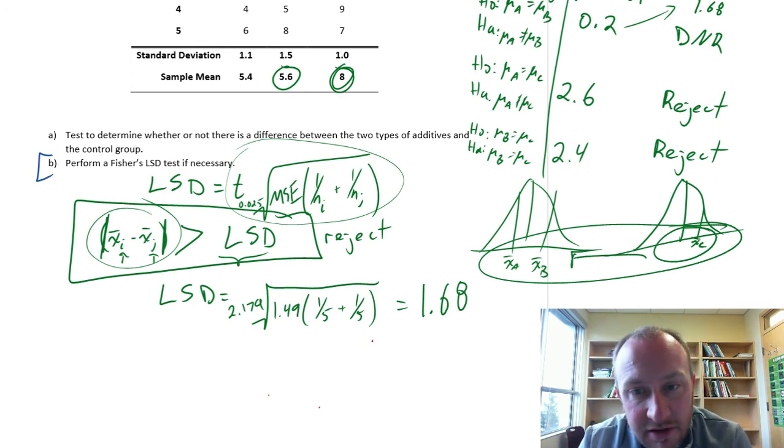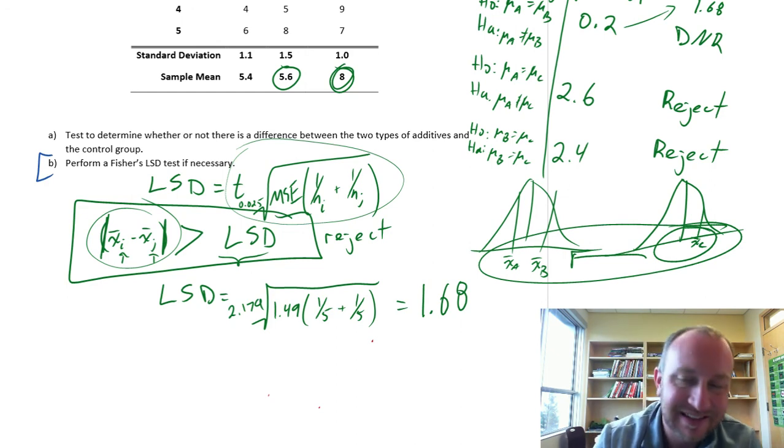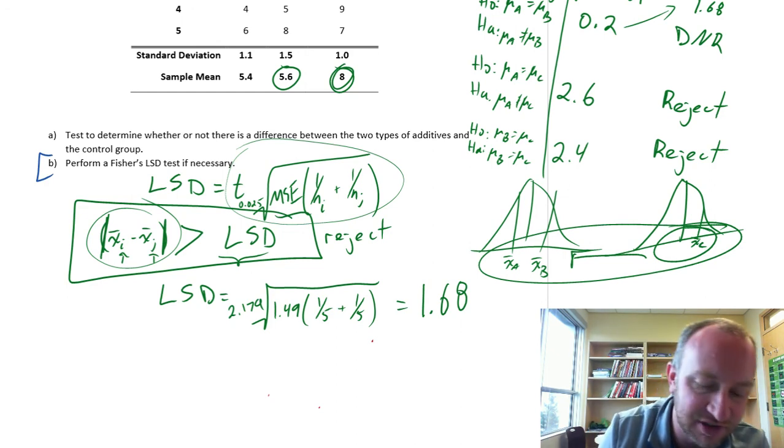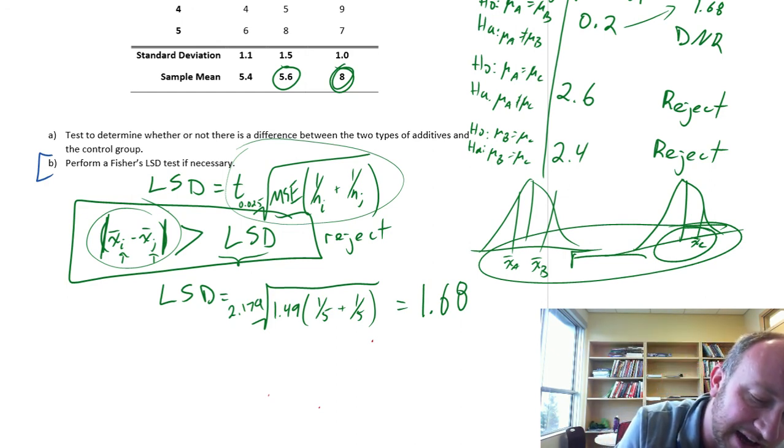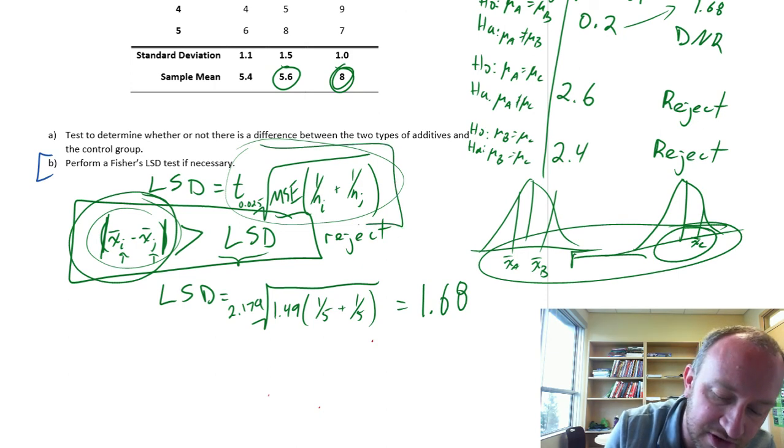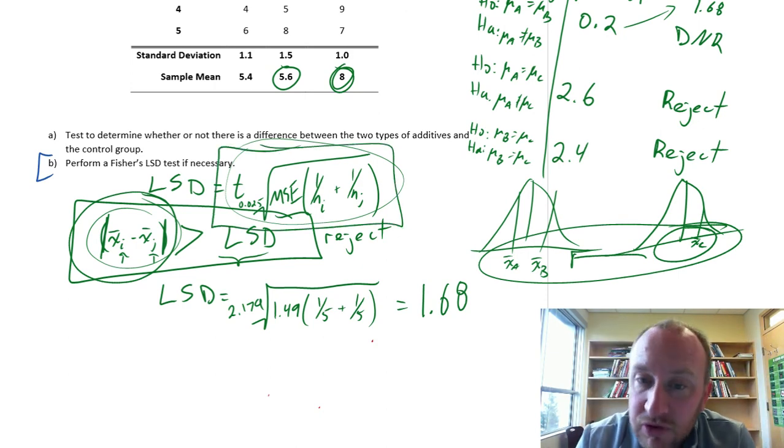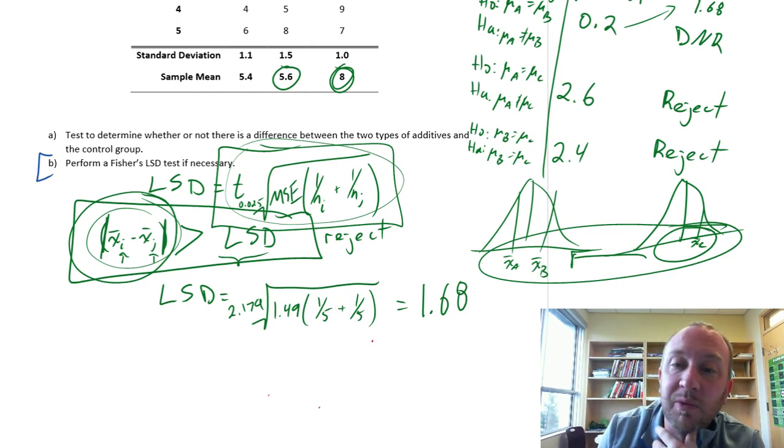That's all there is to our Fisher's LSD procedure. It's basically a series of two population tests where we have a slightly different type of rejection rule comparing the absolute value of the point estimate of the difference values of the difference of sample means to this Fisher's LSD level. I hope that helps. We'll do a couple more. Thanks for watching.